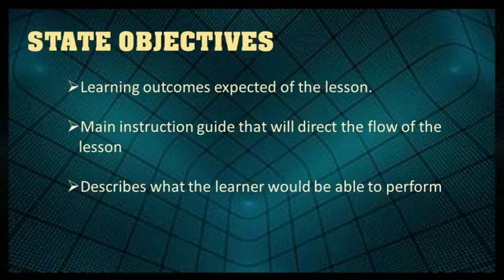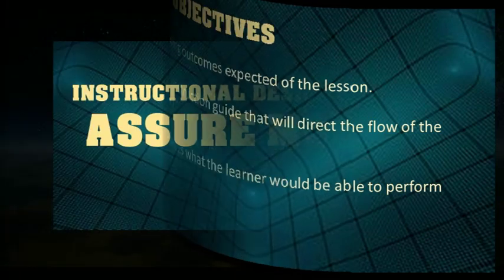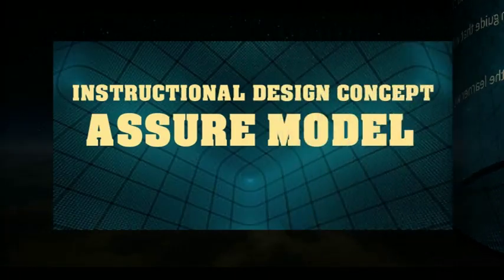The second step is S — State Objectives. Here, the learning outcomes expected of the lesson are written. This will be the main instructional guide that will direct the flow of the lesson. This step describes what the learner would be able to perform.